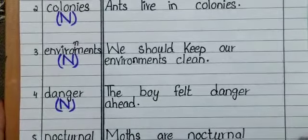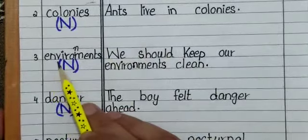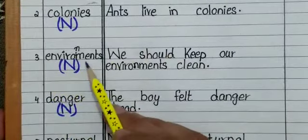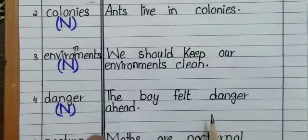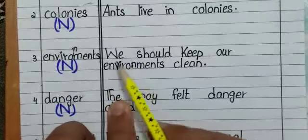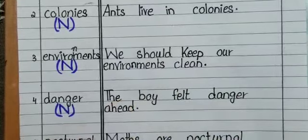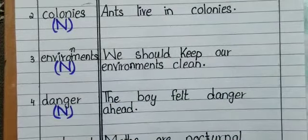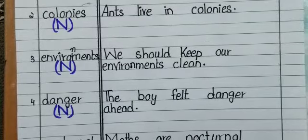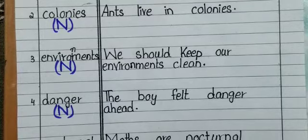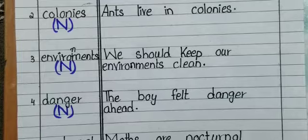Number three: 'environments' — E-N-V-I-R-O-N-M-E-N-T-S. It is a noun. The example sentence is: 'We should keep our environments clean.' You can also use environment in different sentences — for example: 'We must try to protect the environment.' Or: 'Children need a happy home environment.'